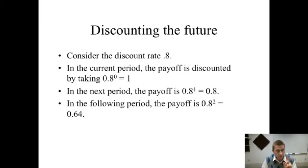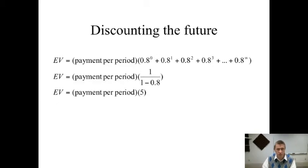In the current period, it's 0.8 to the zeroth power. In the next period, it's 0.8 to the first power, which is 0.8. Then the following is 0.8 squared, the one after that would be 0.8 cubed, and so on.